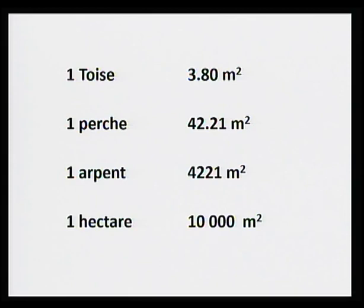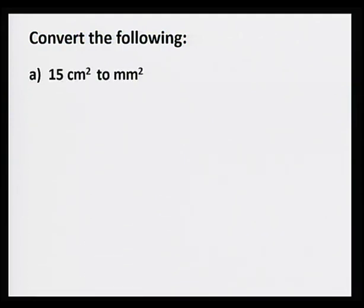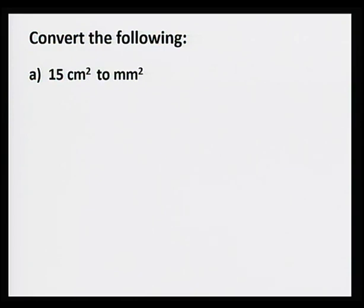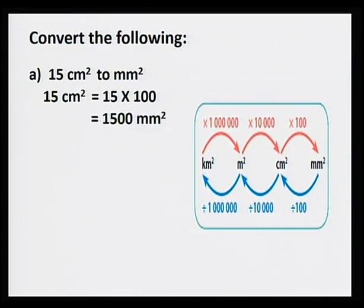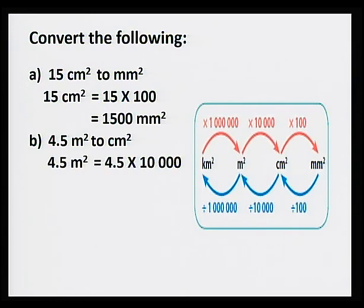Now let's have a look at how to do the conversion between the different units of area. We have 15 centimeters squared to convert to millimeters squared. To convert from centimeters squared to millimeters squared, we multiply by 100. So 15 centimeters squared is equal to 1,500 millimeters squared. Now we have to convert 4.5 meters squared to centimeters squared. From meters squared to centimeters squared, we multiply by 10,000. So 4.5 meters squared is equal to 45,000 centimeters squared.